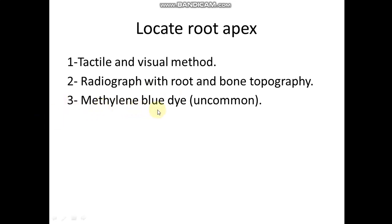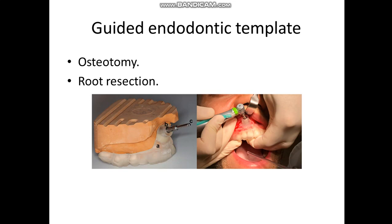We can also use methylene blue, which is not common because it can be absorbed by the bone. Nowadays, people are using guided endodontic templates — this is a guided endodontic template based on the templates used in dental implants. As we can see, this is the template with the hole through which the drill is guided. This is very important and can be used to locate the osteotomy site, the depth, and the diameter of the bone removal. It can also be used for augmentation, and through the guided endodontic template it can be used for root resection as well. So it is very important to locate the site, depth, diameter, and also angulation during osteotomy and root resection.